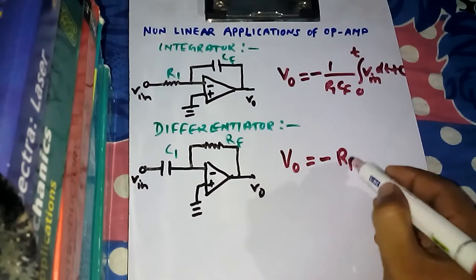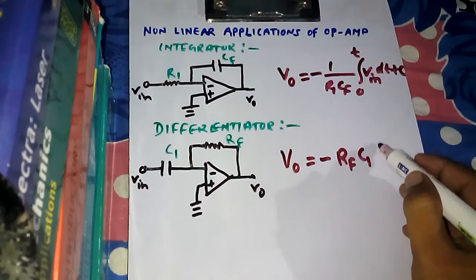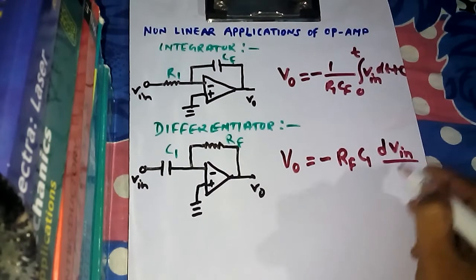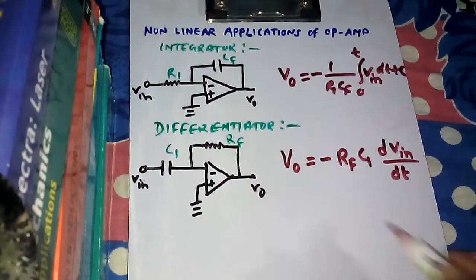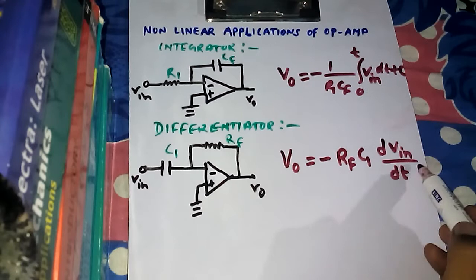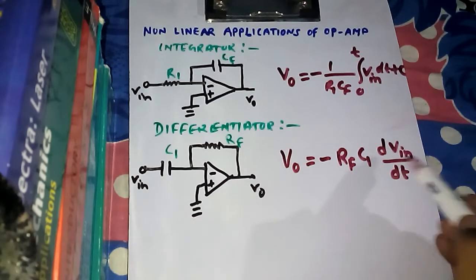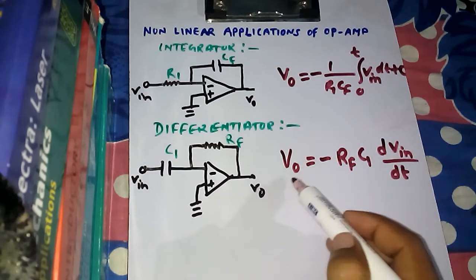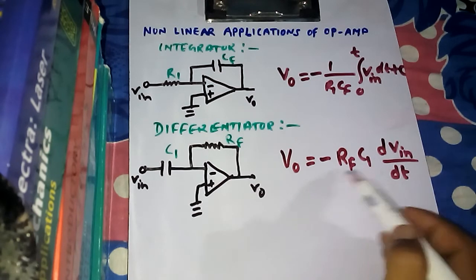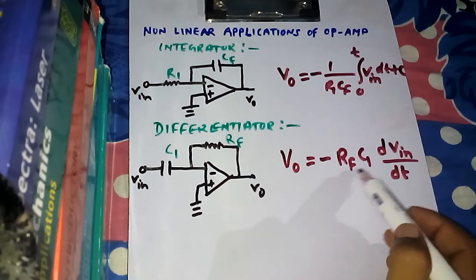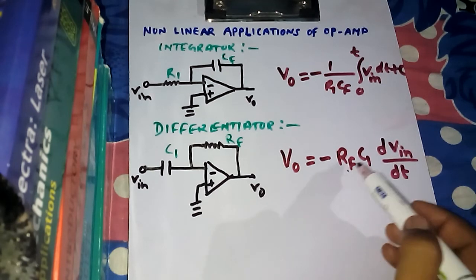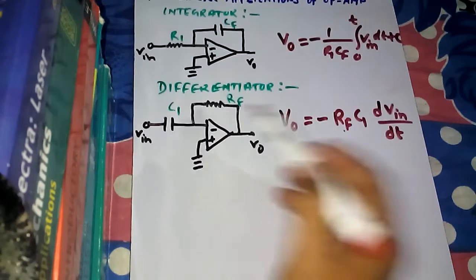Now we will write down the standard output voltage for the differentiator circuit. V-output equals minus R-F times C1 times dV-input by dt. This circuit gives us the derivative operation on the input. The output is not just the derivative of the input — there is also a scaling factor, which is the gain, and it depends on R-F and C1.